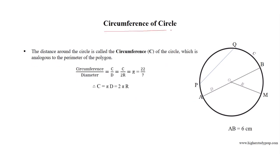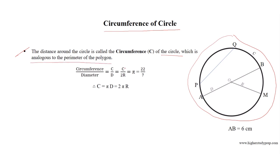Circumference of a circle. The distance around the circle is called the circumference, which is analogous to the perimeter of a polygon. The ratio of circumference to diameter equals pi, which is approximately 22 divided by 7, or approximately 3.14. So we can write that circumference equals pi times D, which equals 2 times pi times R, since diameter equals 2 times the radius.